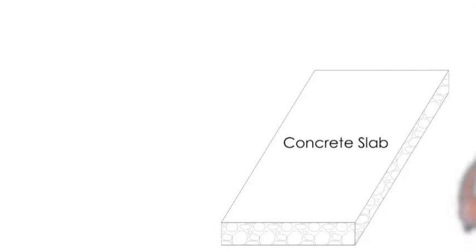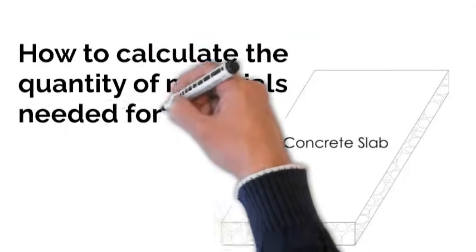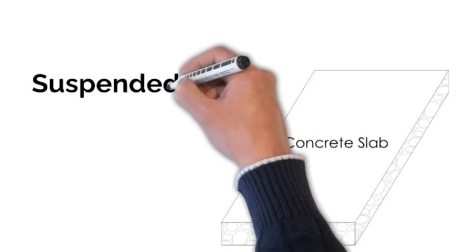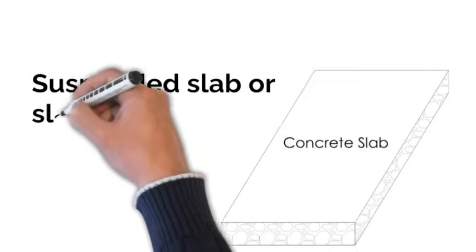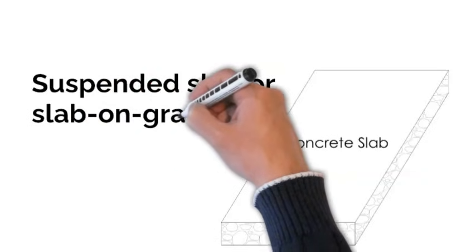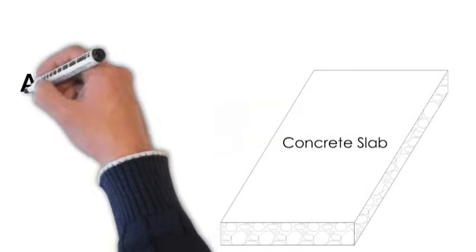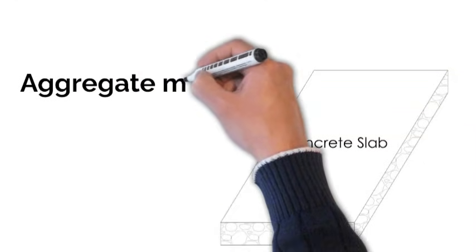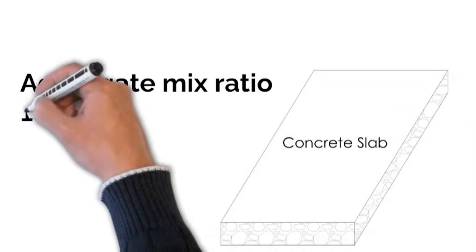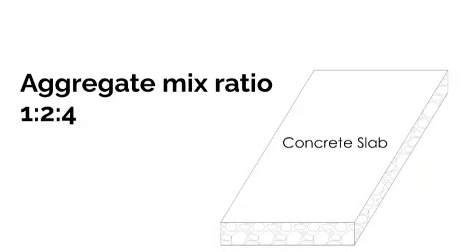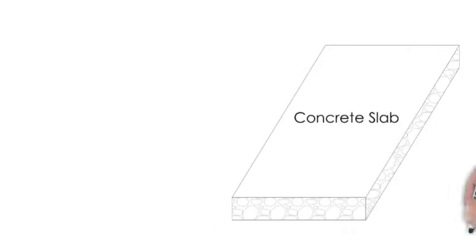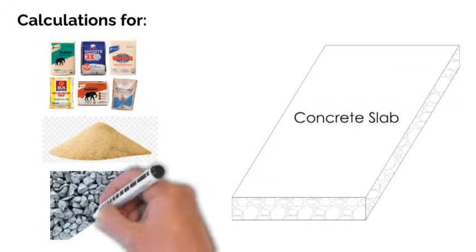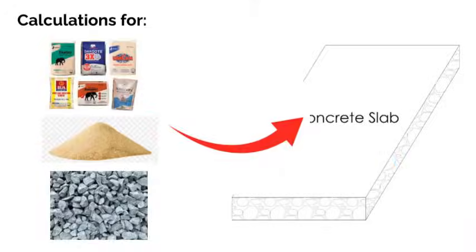We'll be looking at how to calculate the volume of materials needed in a concrete slab. This slab can be suspended, that is a decking slab, or on grade, that is on the ground like your DPC. We have an area and a specified mix ratio of 1:2:4. The next thing for us to do will be to calculate how much cement, sharp sand, and gravel will be needed to cast this entire floor slab.